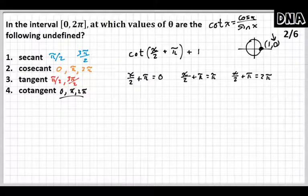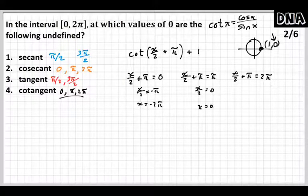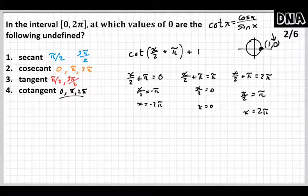And then we do algebra. So I'm going to subtract π from both sides and I get x divided by 2 equals negative π. And then I multiply both sides by 2 so I get x equals negative 2π. I do the same process for the next one. I get x equals 0. I do the same process for the next one. I get 2π.